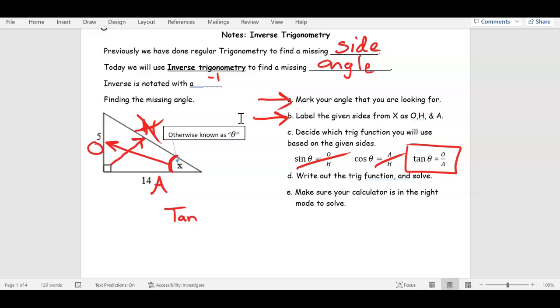Now, what do I always put after the trig? The angle. What's the angle? I don't know it, but it's X, okay? I'm missing the angle, but I still got to put it. Tan X equals, and then I'm going to put O over A, right? O over A is 5 over 14, okay?